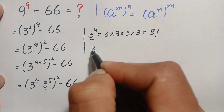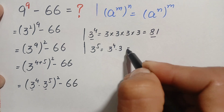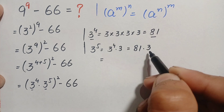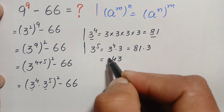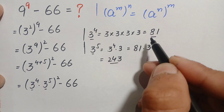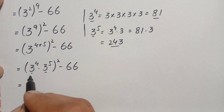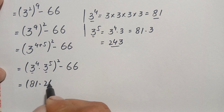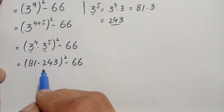Next we find 3 raised to power 5. This can be written as 3 raised to power 4 times 3 raised to power 1, which is 81 times 3 equals 243. So we have (81 × 243) whole squared minus 66.